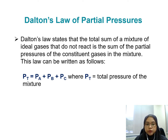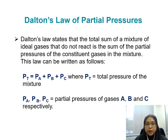We have Pt equals to PA plus PB plus PC, where Pt is the total pressure of the mixture, and PA, PB, and PC are the partial pressures of gases A, B, and C respectively.